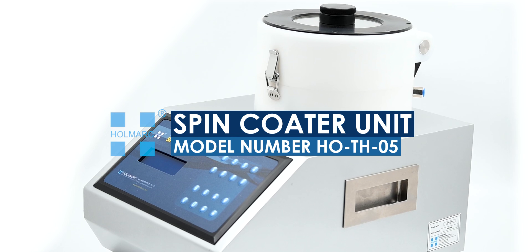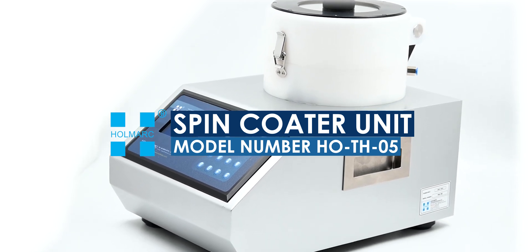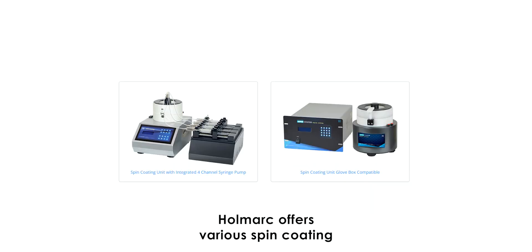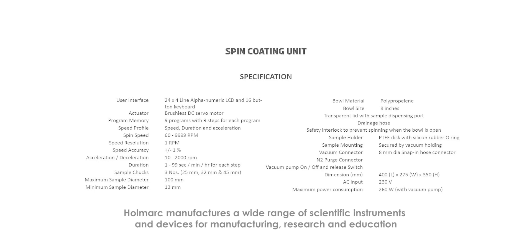Hallmark spin coater unit model number HOS TH05. Hallmark offers various spin coating units tailored to specific application requirements. Hallmark manufactures a wide range of scientific instruments and devices for manufacturing, research, and education. Visit us at www.hallmark.com and contact us at sales@hallmark.com. Order your products now.